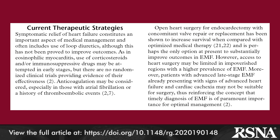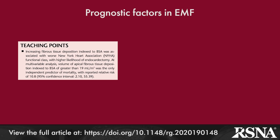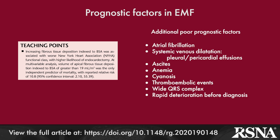Increasing fibrous tissue deposition in the heart, as determined by delayed enhancement MR, is associated with worse New York Heart Association functional class, a higher likelihood of endocardectomy, and is an independent predictor of mortality. Other associations include a high prevalence of atrial fibrillation in patients with right ventricular or biventricular EMF, and pleural and pericardial effusions and ascites in those with right ventricular involvement.